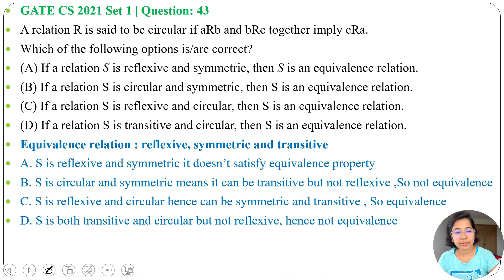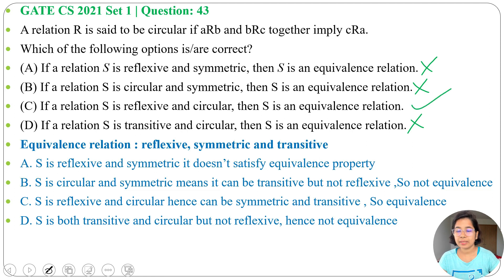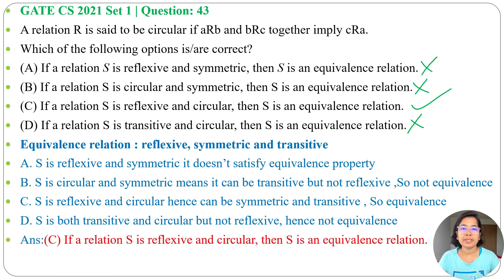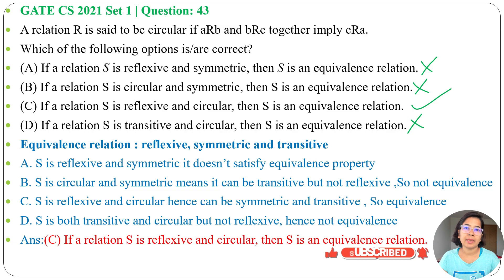So options A, B, and D are not equivalence relations, while option C is an equivalence relation. The answer is option C: if a relation S is reflexive and circular, then S is an equivalence relation — because reflexive and circular together imply symmetric and transitive. Please like, share, and subscribe if this lecture was helpful. Thank you.